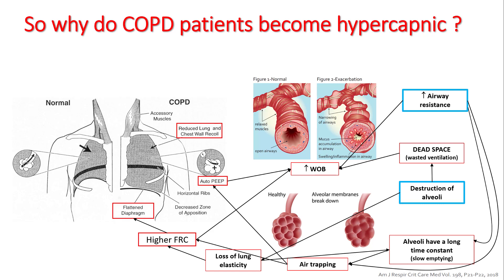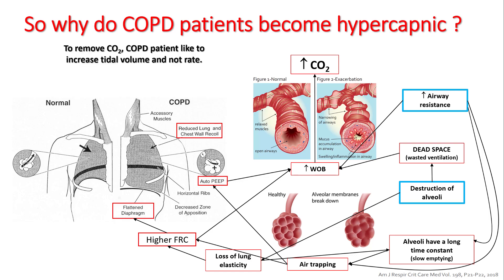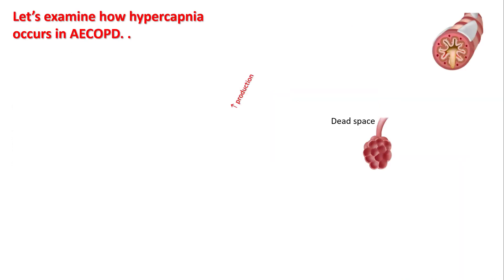All of this results in increased CO2 production. The way COPD patients compensate is by increasing their tidal volume rather than rate, as discussed in the work of breathing lecture. Let's see what happens in a COPD exacerbation.